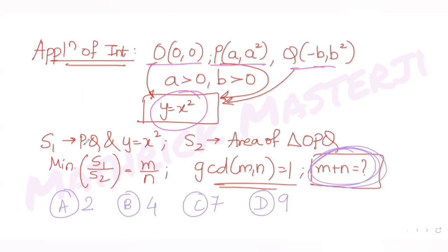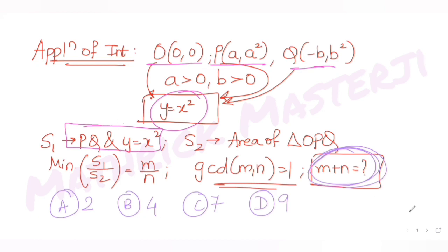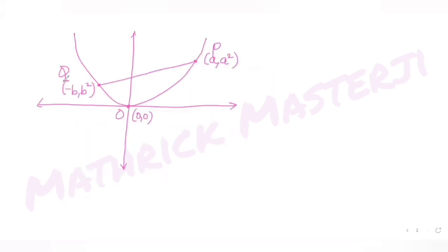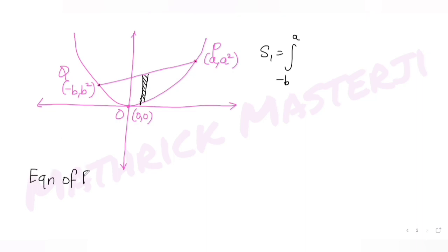S1 is the area between line PQ and the parabola y = x². Drawing a vertical strip, I can see it goes from -b to +a. So S1 has limits from -b to a, integrating (line minus parabola). To set that up, we first need the equation of line PQ, using the point-slope form y - y₁ = m(x - x₁).